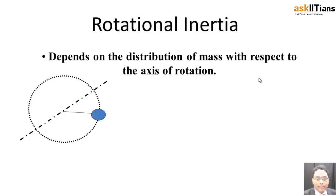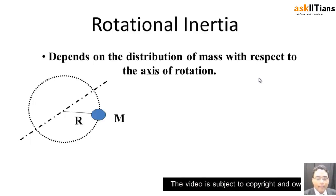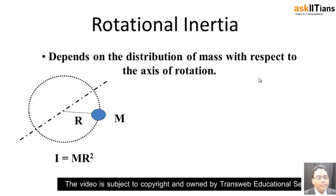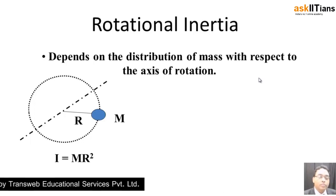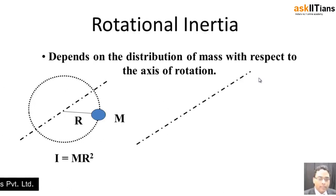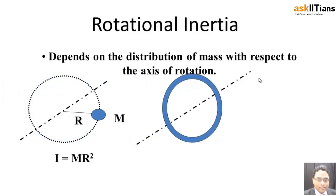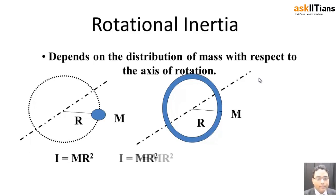Here we have a very thin ring moving in a circular path. If M is the mass and R is the radius, then the moment of inertia of this ring is going to be equal to MR². Similarly, if I take a disk — a slightly bigger ring — in this case as well the moment of inertia will still be equal to MR², where M is the mass of this particular ring.